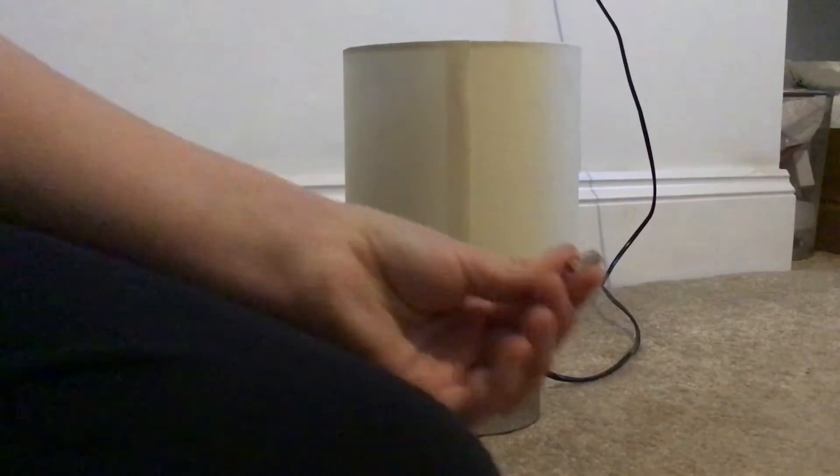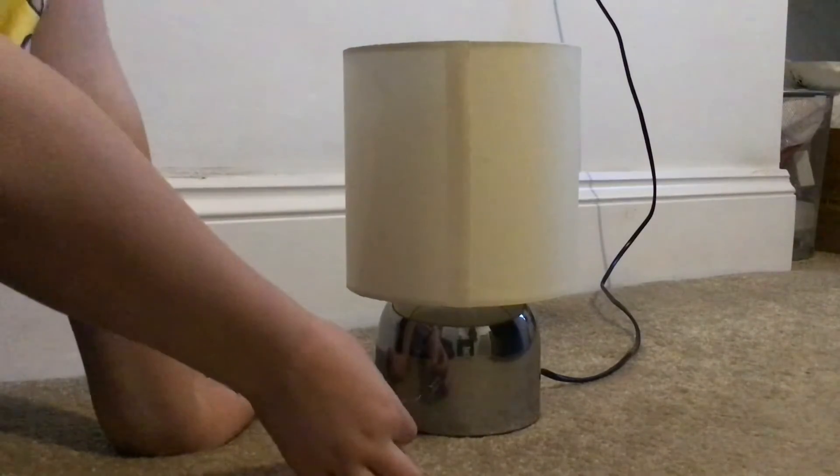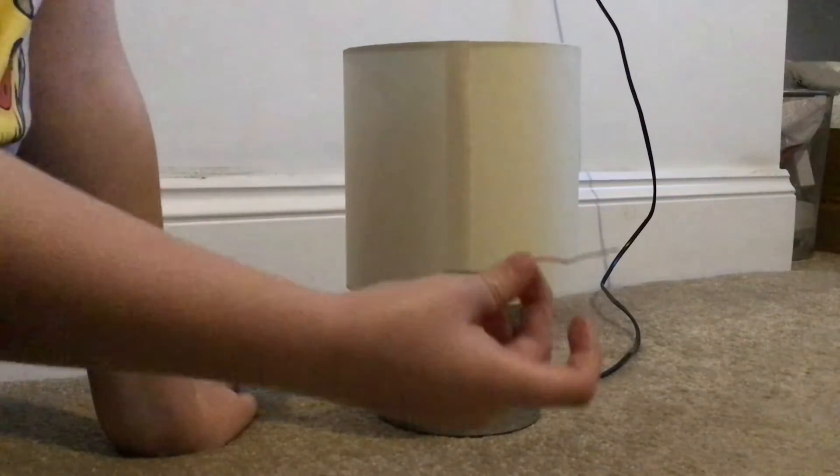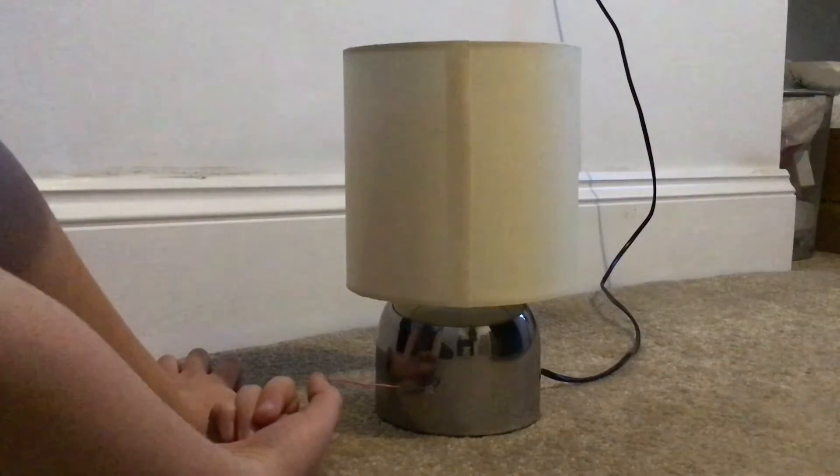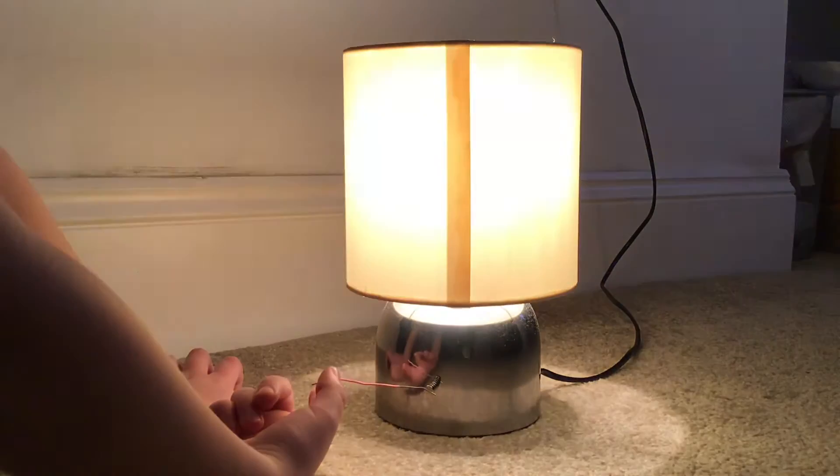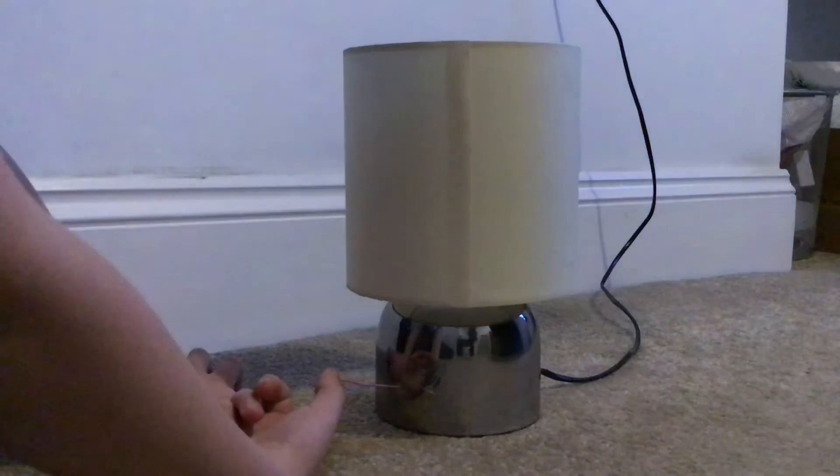You get your magnets and put them on the bottom of the lamp, then you grab your paper clip and put them on the magnets like so. When you touch it now, boom, it lit up! You can do it a few times, then it turns on.